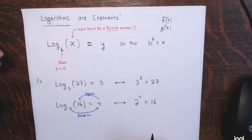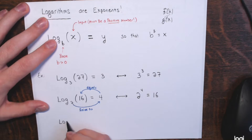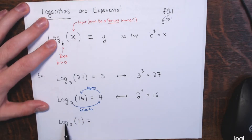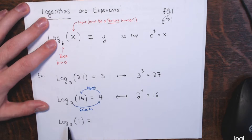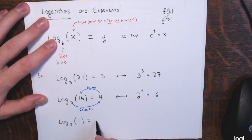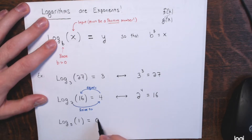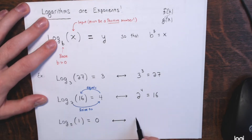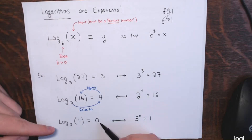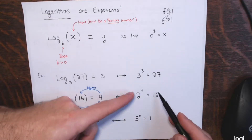One more quick one: the log base 5 of 1. I have a function called log base 5, the input is positive 1, and the output is the exponent I would need to raise 5 to in order to get 1. Remember, anything to the 0 power is 1, so this is 0 — the output is 0. That's equivalent to saying 5 to the 0 power equals 1. They mean the same exact thing in different form. The left side is logarithmic form and the right side is exponential form.